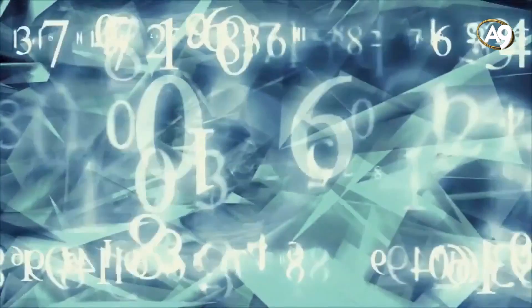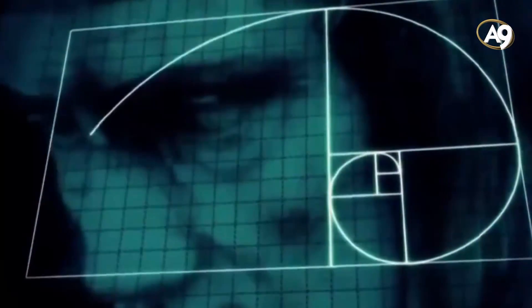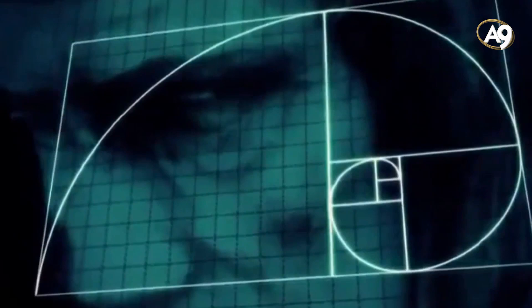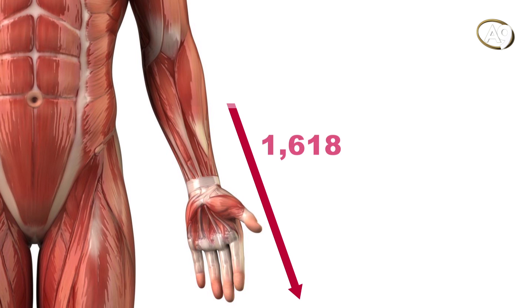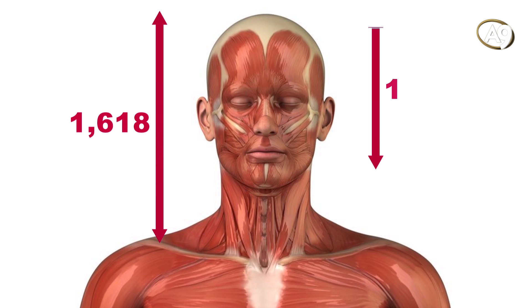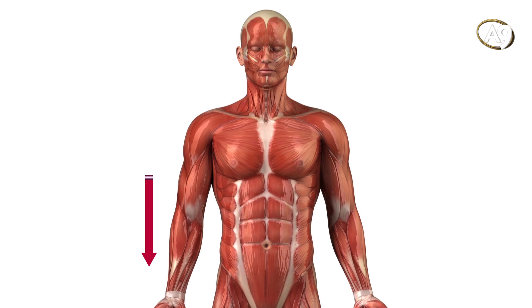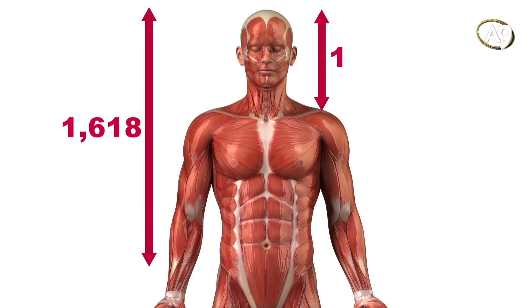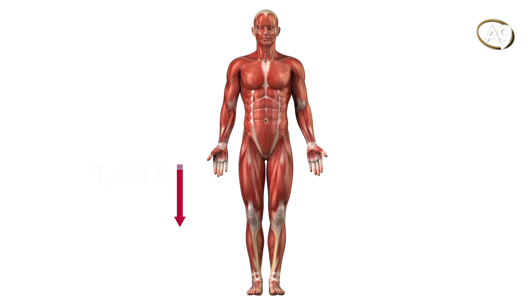Some other golden proportions in the average human body are: the distance between the fingertip and the elbow divided by the distance between the wrist and the elbow; the distance between the shoulder line and the top of the head divided by the head length; the distance between the navel and the top of the head divided by the distance between the shoulder line and the top of the head; and the distance between the navel and the knee divided by the distance between the knee and the end of the foot.